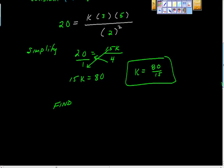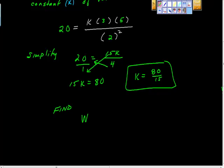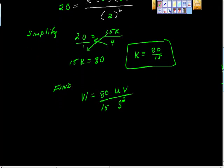So remember that our original equation was w equals k times uv over s squared. And we did have a k value here, but now we've solved that, and we know that k is 80 over 15. So 80 over 15, s squared. And this thing does simplify out. It simplifies out to w is equal to 16 thirds uv over s squared. And this is our complete specific formula, and we got that by solving for k and plugging it back in.